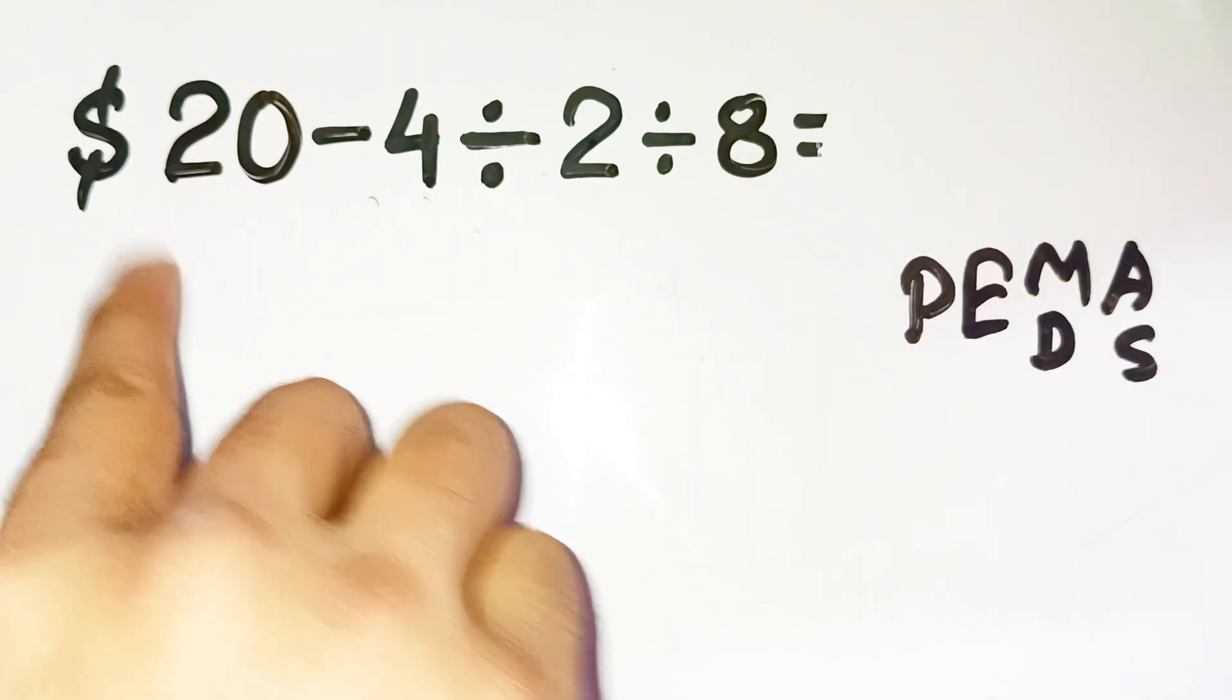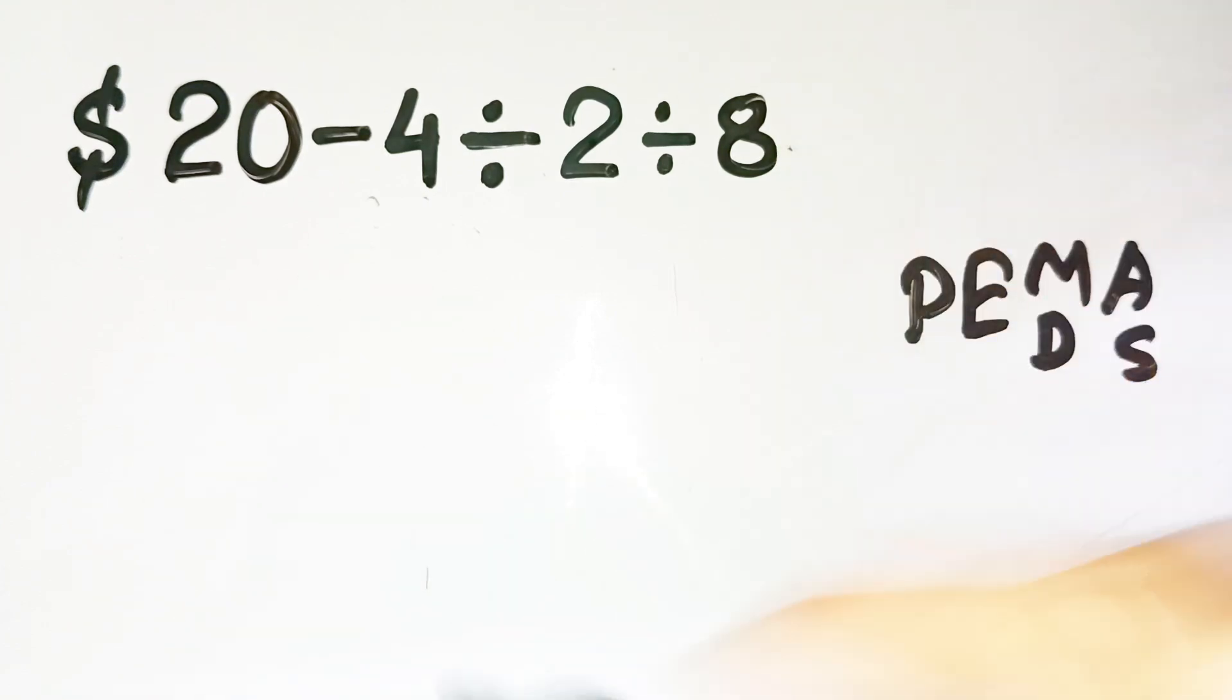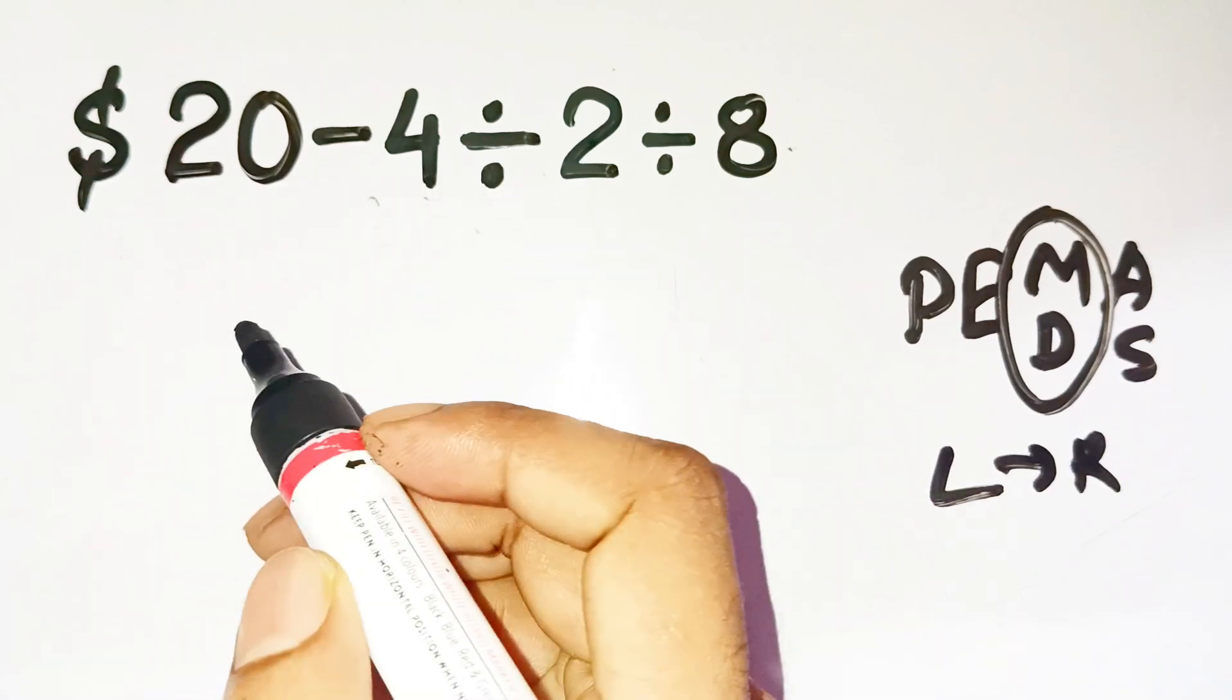PEMDAS stands for parentheses, exponents, multiplication, division, addition, and subtraction. And here's the part that most people forget. Division and multiplication share the same priority. That means you don't just jump to subtraction first, you go from left to right, handling any division or multiplication before subtraction.